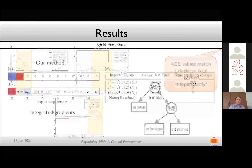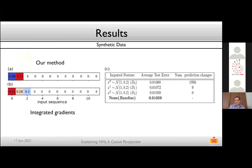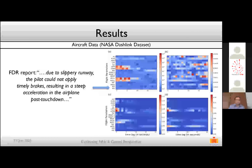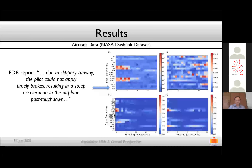If you independently build a decision tree on the Iris dataset, you get very similar results: petal width less than 0.29 gives Iris setosa, between 0.3 and 0.69 gives Iris versicolor, and greater gives Iris virginica. This agrees closely with the causal effect measurements from our method. Another experiment was conducted jointly with Honeywell Aerospace on aircraft data — time series data of various aircraft parameters used to classify whether a landing was anomalous or non-anomalous.